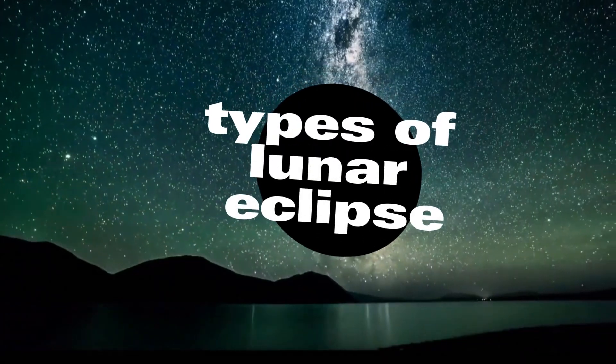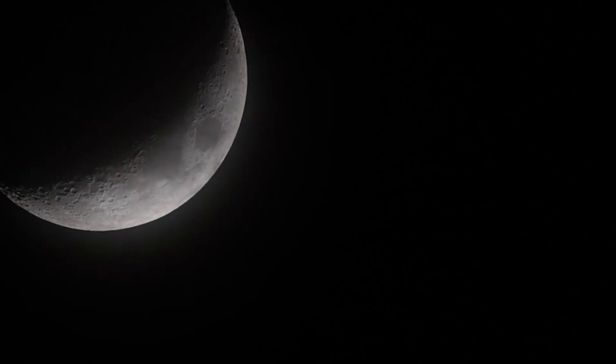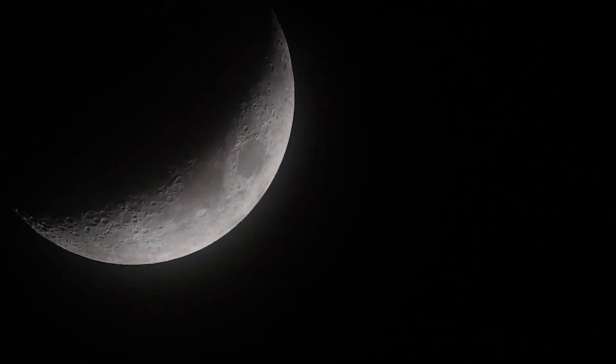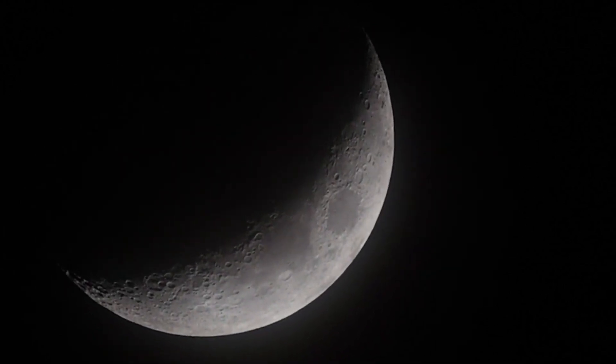Types of Lunar Eclipses. Total Lunar Eclipse. In a total lunar eclipse, the entire moon passes through Earth's dark umbral shadow, turning a deep shade of red or copper. This phenomenon, often called a blood moon, captivates viewers with its eerie beauty.